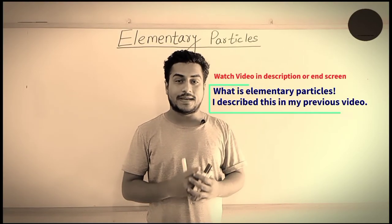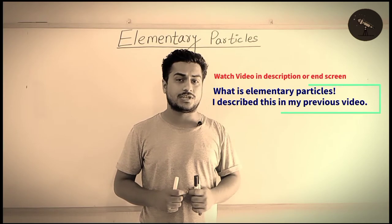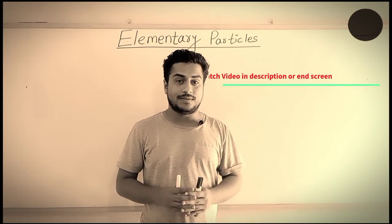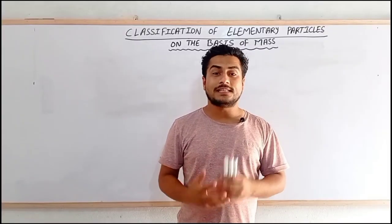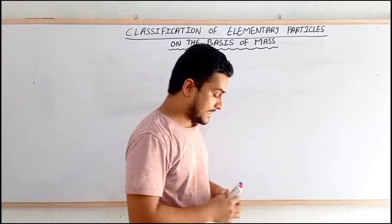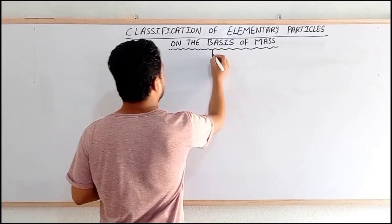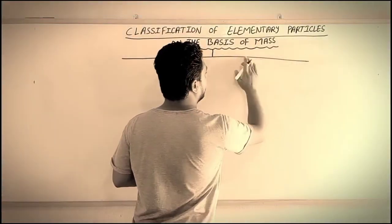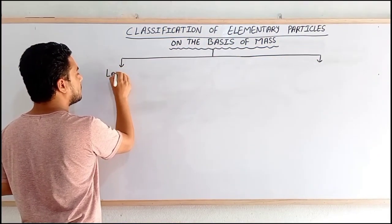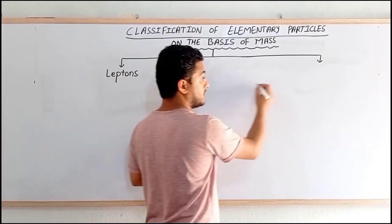Elementary particles are those particles which do not have an internal structure, or whose internal structure cannot be described. Elementary particles can be classified on the basis of their masses into two groups: leptons and hadrons.